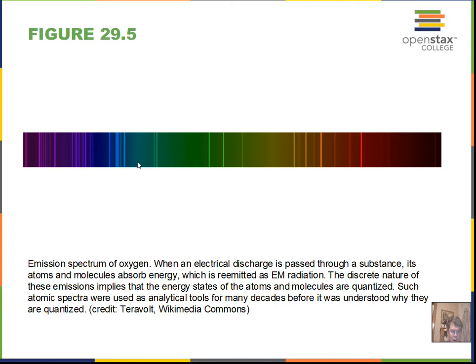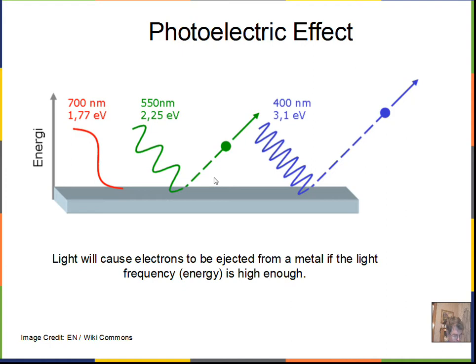Here's an example showing the oxygen emission spectrum — a bit more complicated than simpler elements. Understanding the blackbody spectrum prepared Einstein and others to explain the photoelectric effect: a problem from the late 1800s that classical physics could not solve — the phenomenon where shining light on a metal can release electrons.